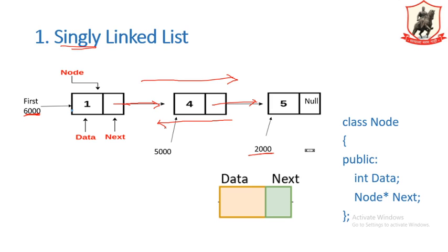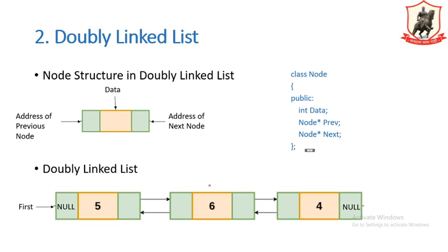In a doubly linked list, we maintain a forward pointer as well as a backward pointer. The forward pointer helps us find the successor of the node and the backward pointer helps us point to the predecessor of the node. Since we are maintaining two pointers — forward and backward — it is called a doubly linked list. If you observe the node structure of the DLL, one extra field is present as compared to the singly linked list.